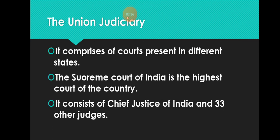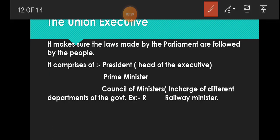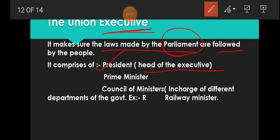Now, union executive. This branch is responsible to make sure the laws made by parliament are followed — jo bhi kanun parliament ne bhanaya hai, wo follow hona chahiye. The union executive includes the President of India, who is the head of the executive branch and is also part of parliament. The President is helped by the Prime Minister and the Council of Ministers.